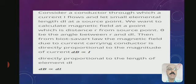We want to calculate the magnetic field at a point which is at distance R from the source point. Let theta be the angle between R and DL. Then from Biot-Savart law, the magnetic field due to the current-carrying conductor is determined.